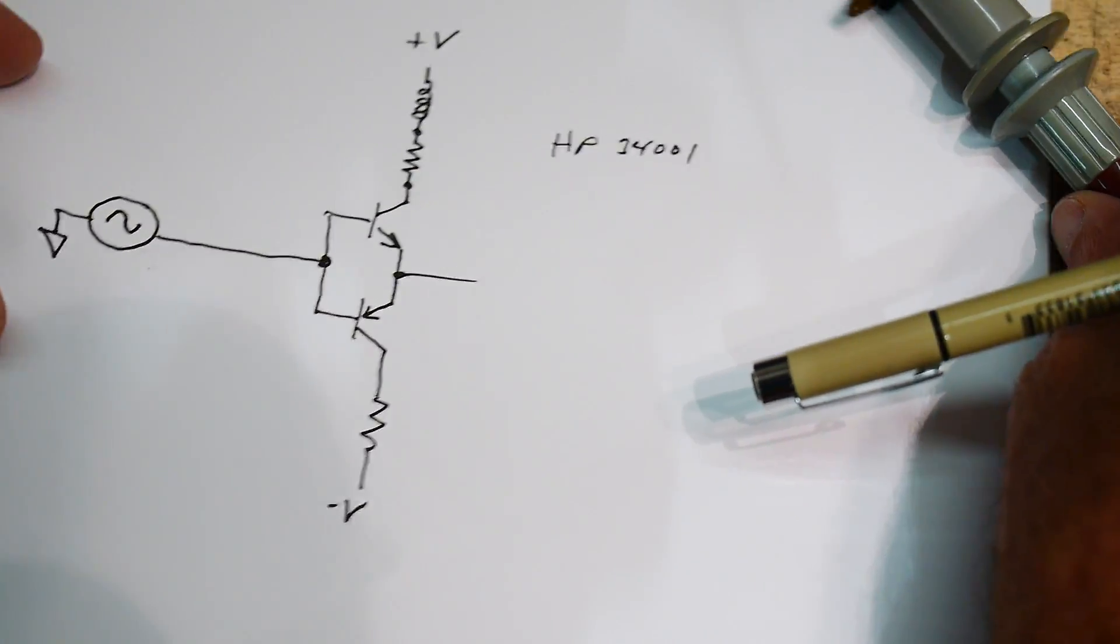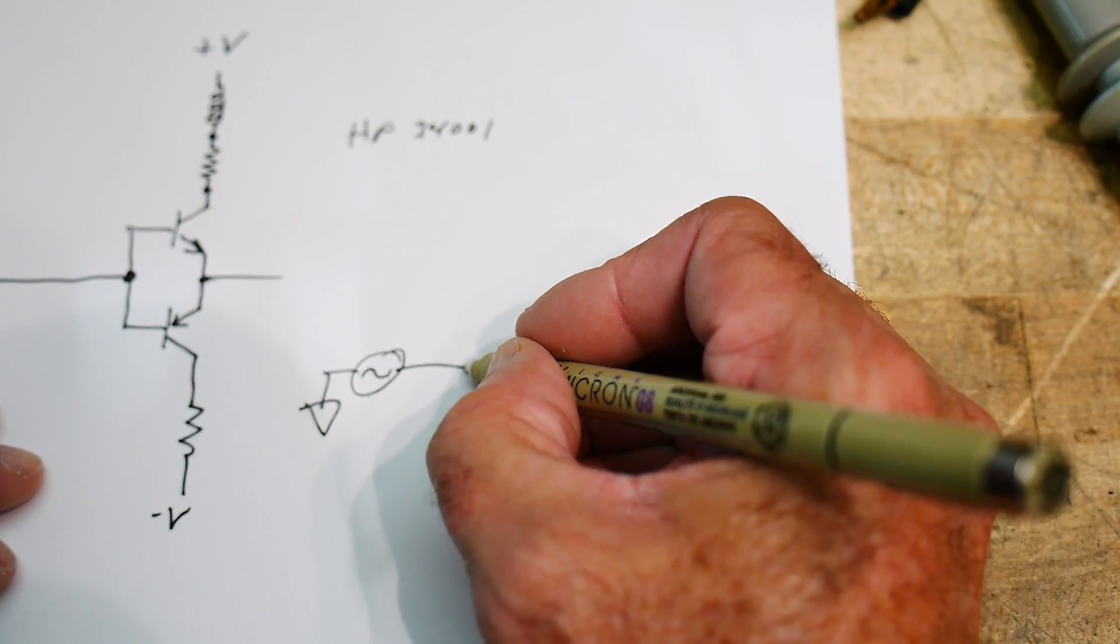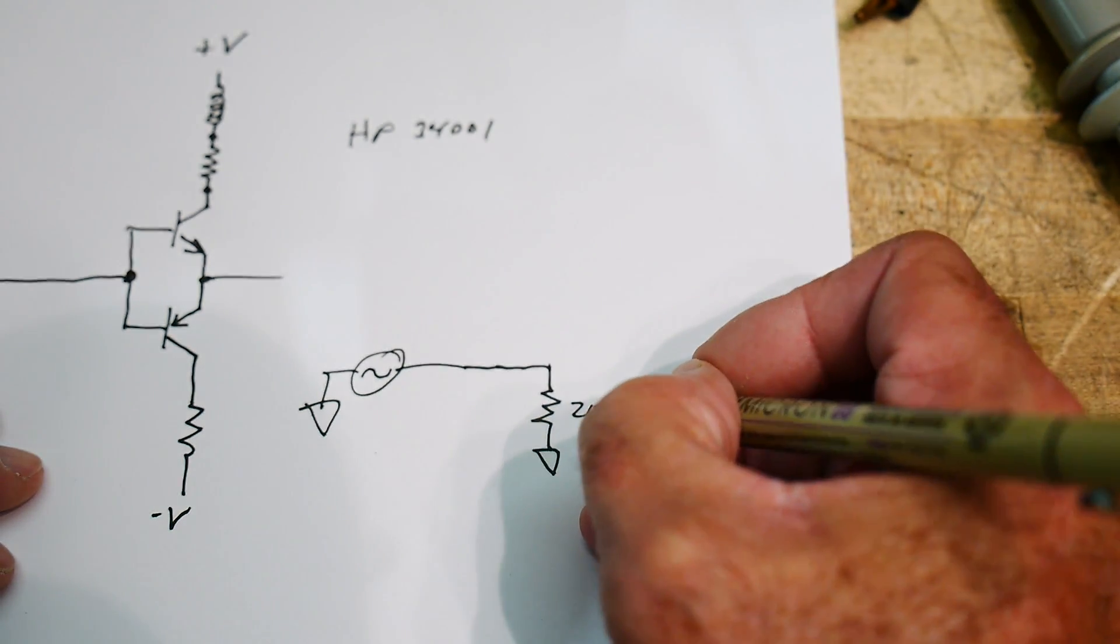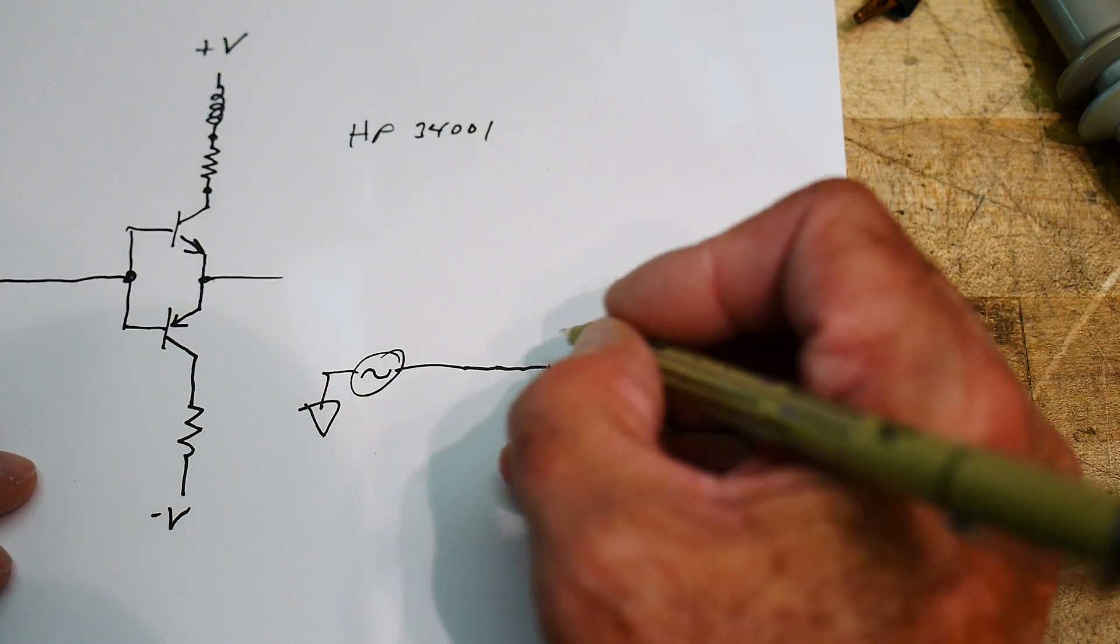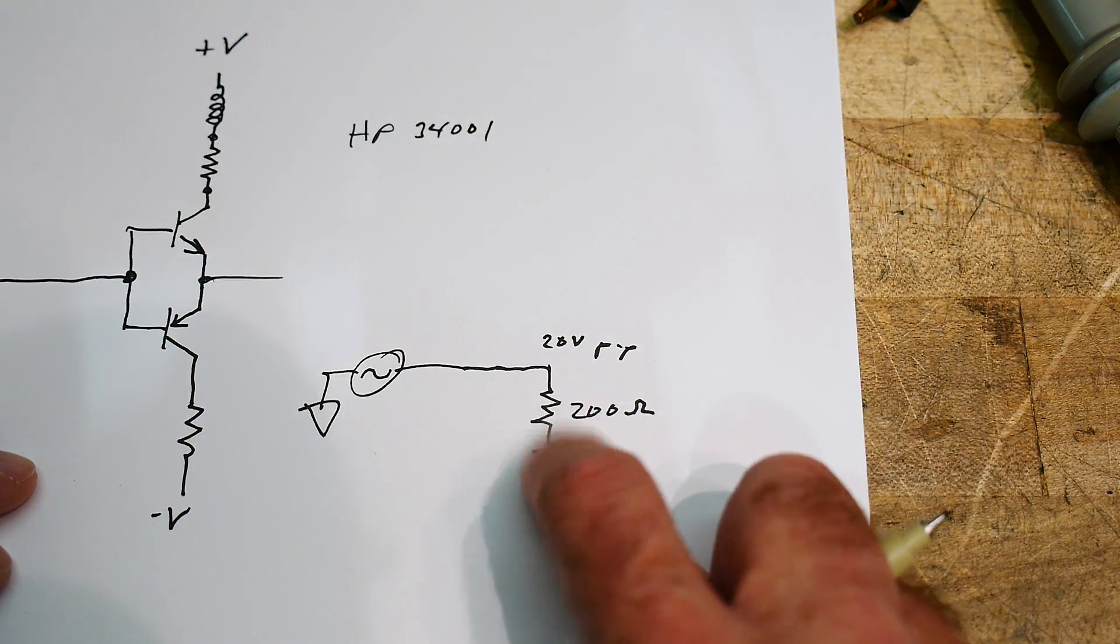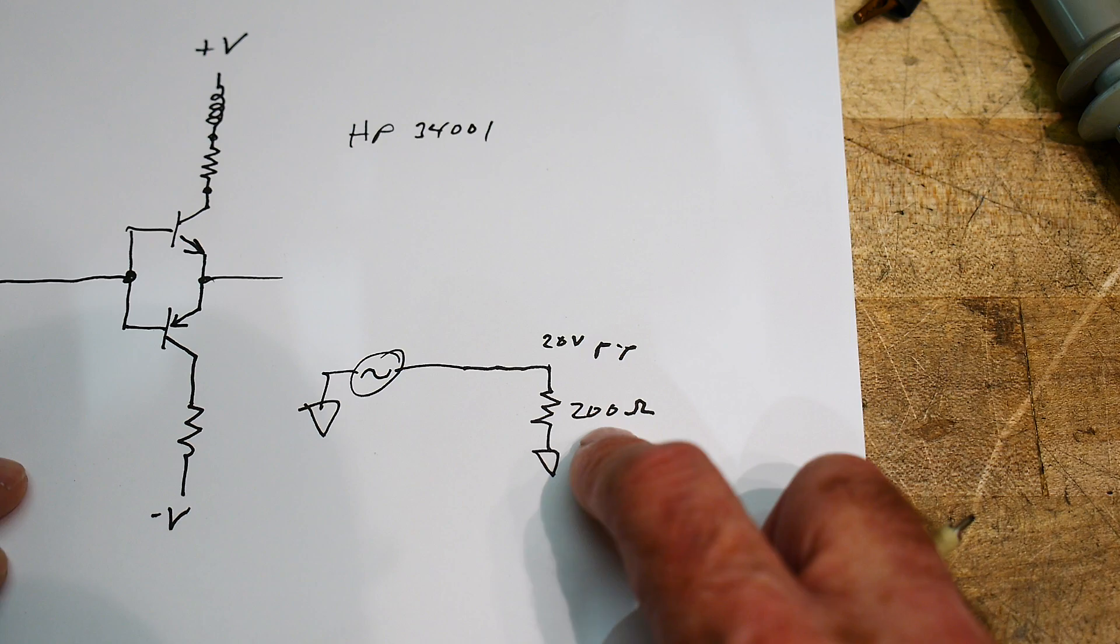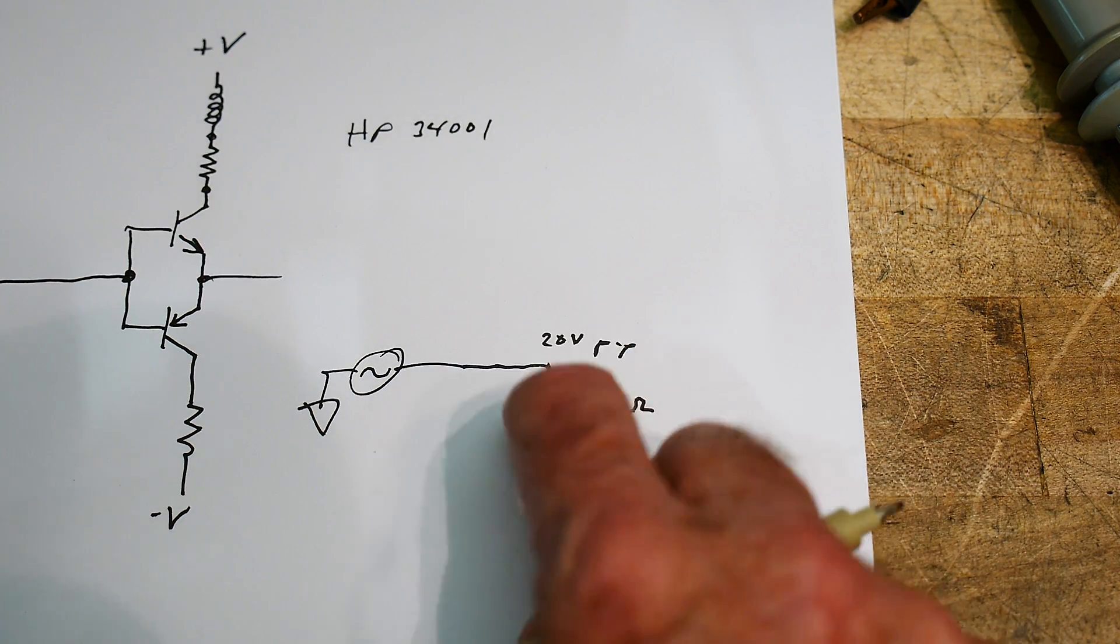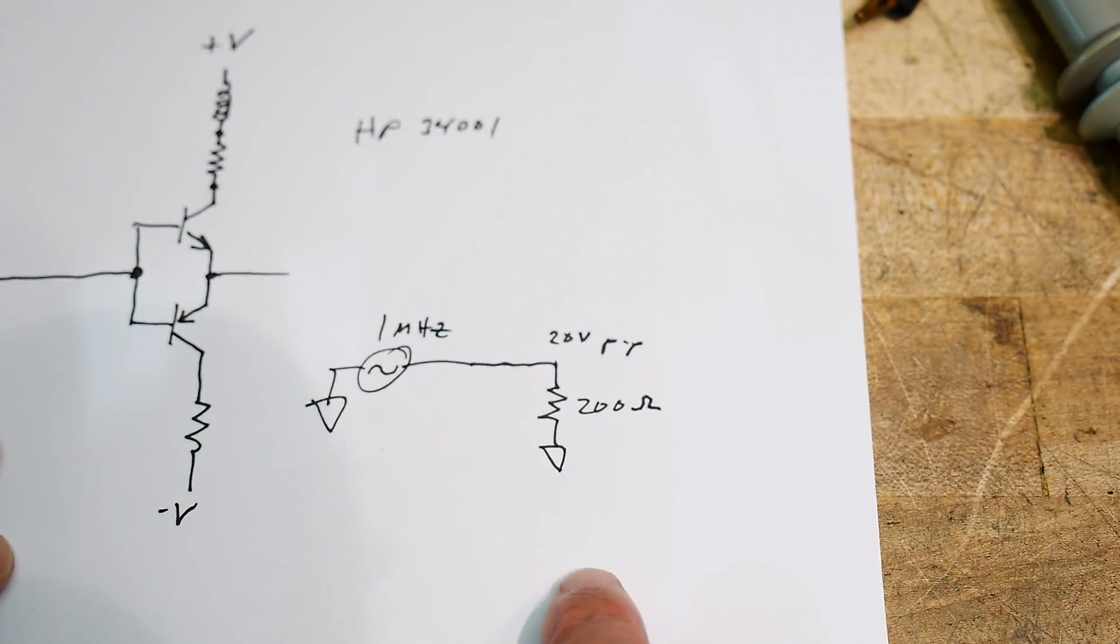And what I'm going to do is I'm going to bring in a function generator. Okay, so my function generator is grounded and I'm going to run it into a 200 ohm resistor. Okay, and I'm going to put 20 volts, 20 volts peak to peak onto that resistor. So we should have 20 divided by 200 is 100 millivolts, 100 milliamps. So we should have 100 milliamps flowing in this thing. So let's go see if we can see it and this is going to be at 1 megahertz.